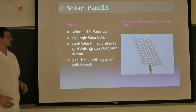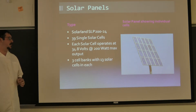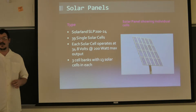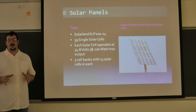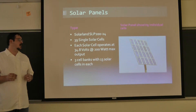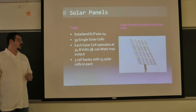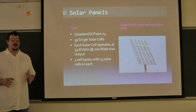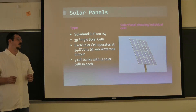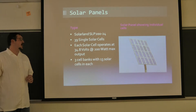We are going to use 39 individual solar cells, each with a 200-watt peak max output. We will take 13 cells and create a cell bank by putting them in series, so each cell bank output will be around 452 volts, which is around the peak operating voltage for the inverter.